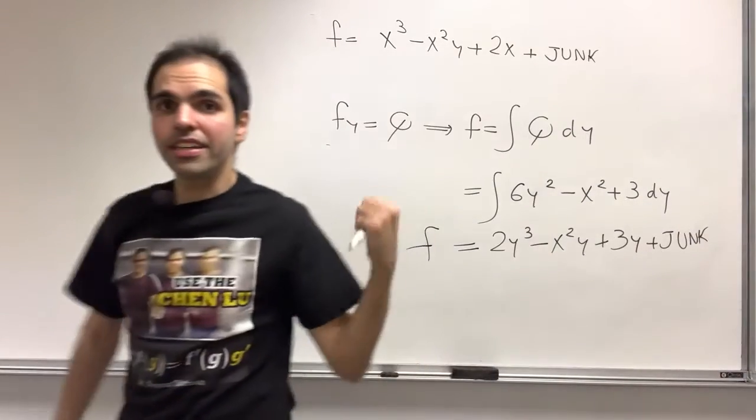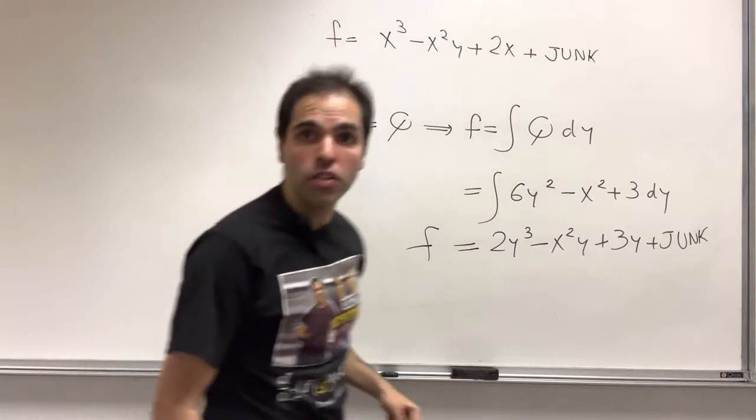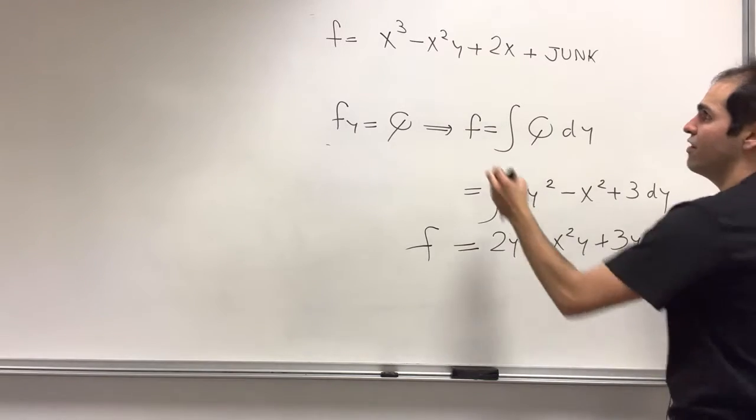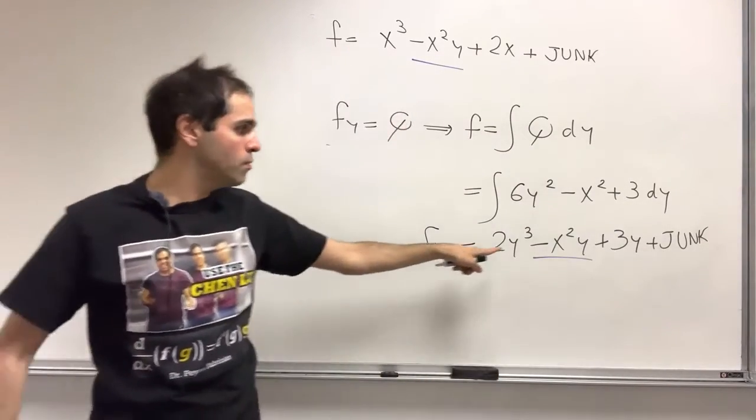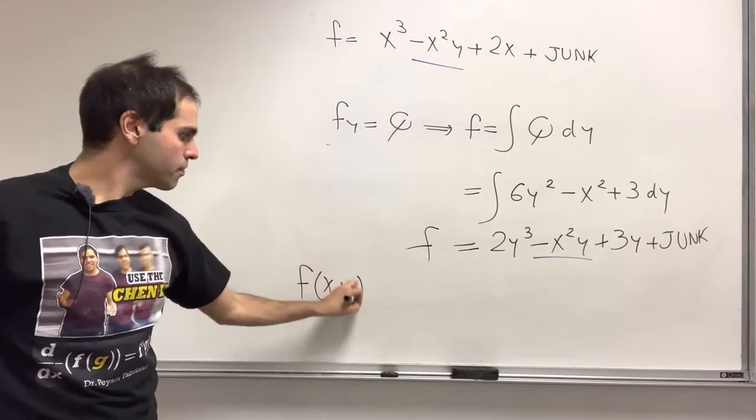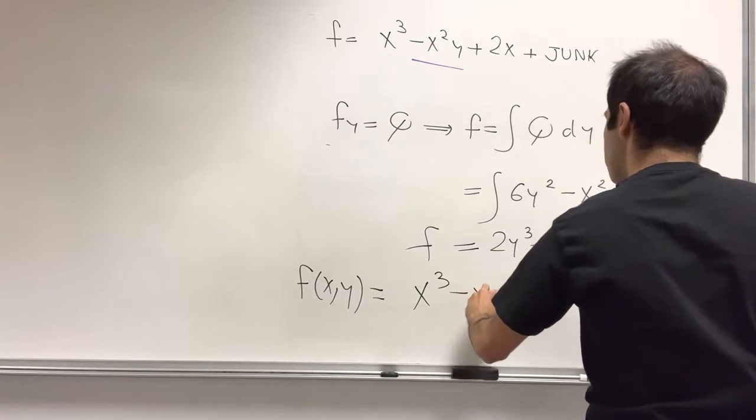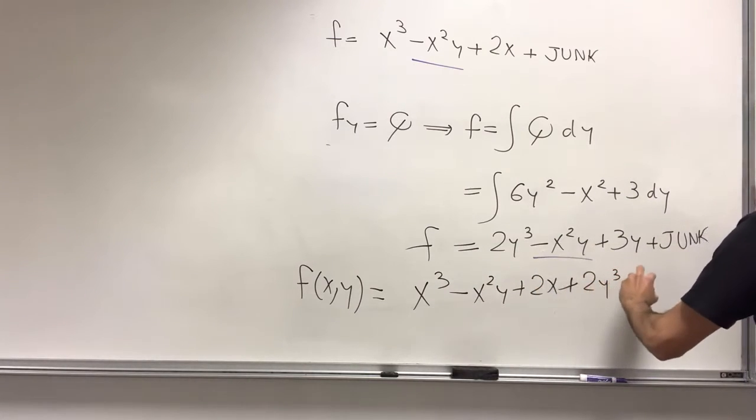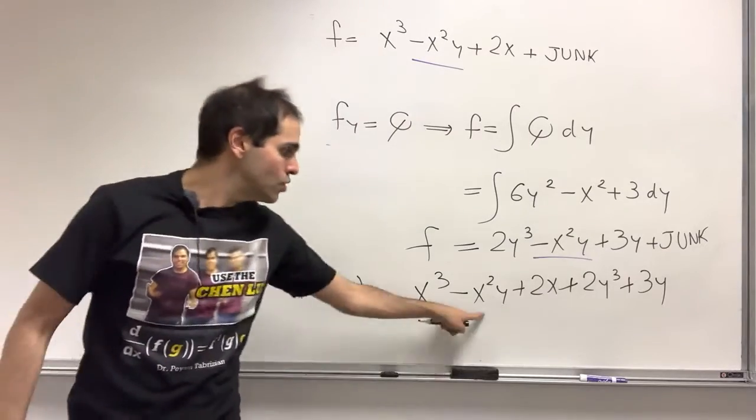There's f. In this case, junk is a function of x. And then you just compare those two without double counting. What do I mean by that? So notice those two functions, so f, they have a common term, minus x squared y minus x squared y. So what you do, you combine all the terms, but you just put minus x squared y once. So what we get is f of xy then becomes x cubed minus x squared y plus 2x and all those other terms, plus 2y cubed plus 3y. And again, you're not adding this minus x squared y again because you already have it here.